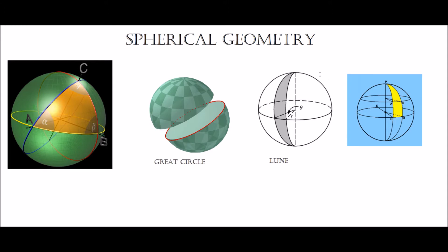So now that we've got the great circle covered, we can move on to the lune. The lune is a section of a sphere which is bounded by two great half circles. In this case, this is the first great half circle and this is the second great half circle. The area in between them, which is shaded in grey, is the lune.